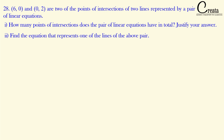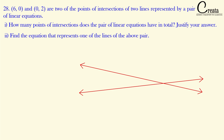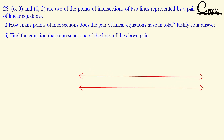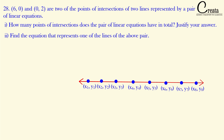Now the question is: how can two linear equations have two intersecting points? If you have two lines, they can intersect at only one point, or they can be parallel. The only condition in which they will have two intersecting points is when they are overlapping with each other. If we take two overlapping lines, they will have an infinite number of intersecting points.